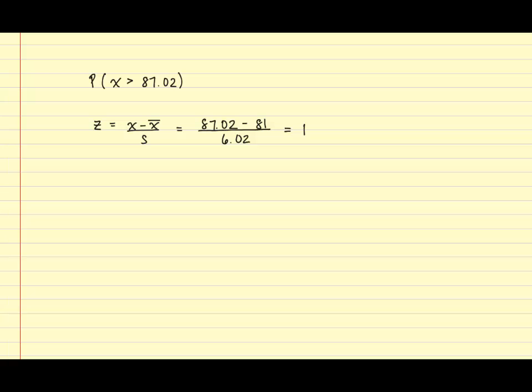So we've converted x to a z-score and now we can find the probability that z is greater than 1. At this point, we're going to use the normal table to find the actual probability.